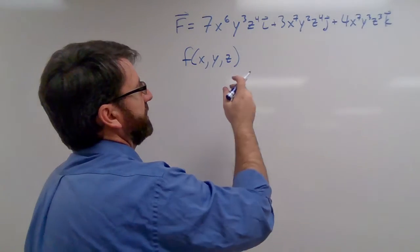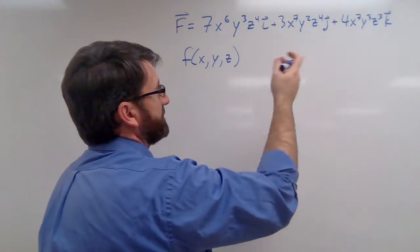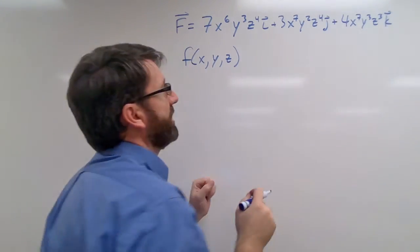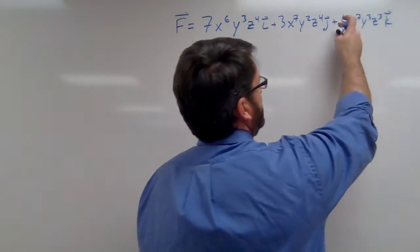The partial derivative of f with respect to y is going to be this, and the partial derivative with respect to z is going to be this.